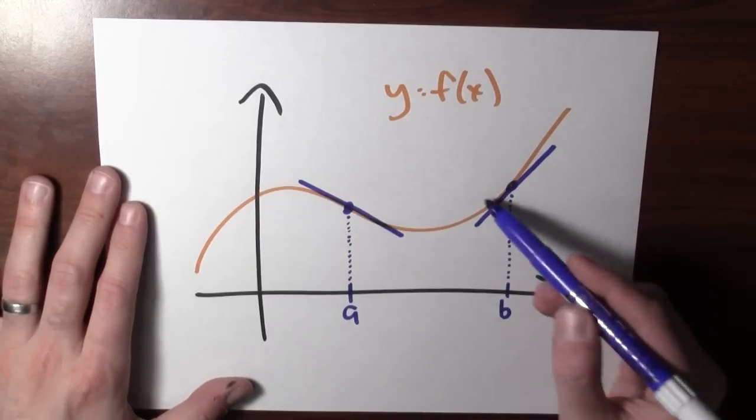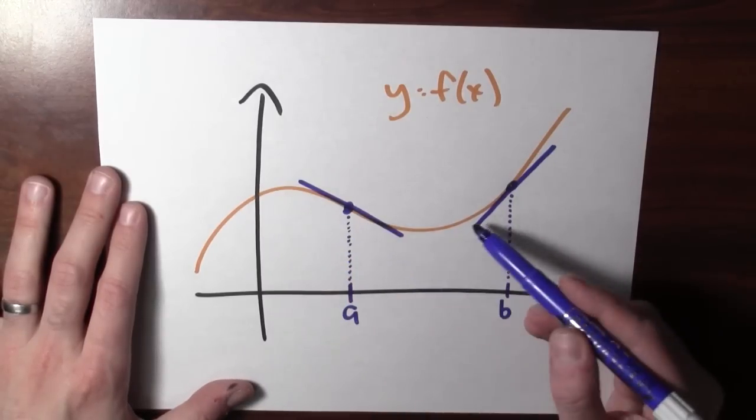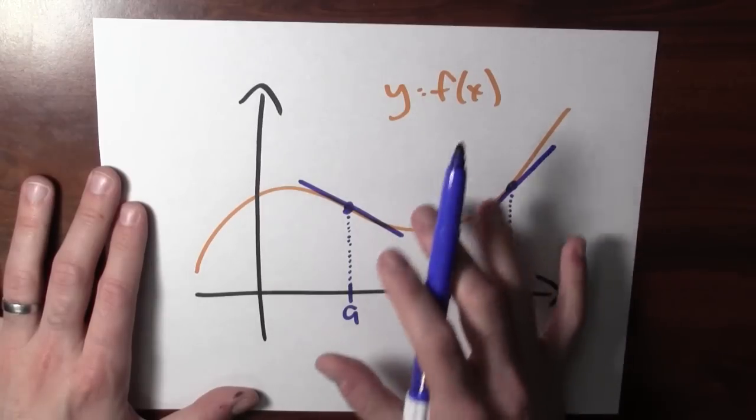The derivative's negative here, and it's positive here. The function's decreasing here and increasing here. So that's what the derivative's measuring.